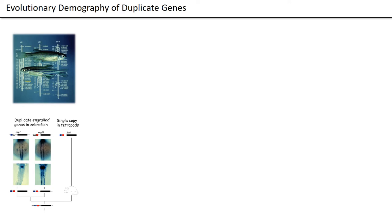One copy is expressed in the pectoral fin appendages; the other is expressed in the segmental interneurons. If you look at the single copy ortholog of this gene in mouse, you'll find that it's expressed in both kinds of tissues. So this was a clear example of a partitioning up of old functions rather than the origin of a new function in the duplicate gene.